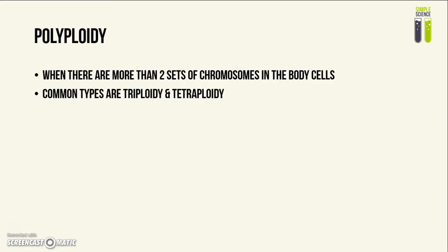So firstly, let's look at what polyploidy actually is. Polyploidy is a condition that occurs when there are more than two sets of chromosomes present in the autosomal cells of the body. The most common types of polyploidy are triploidy and tetraploidy, meaning three sets and four sets of chromosomes in the autosomal cells respectively. Even though they are the most common types of polyploidy, it is worth noting that these conditions are very rare. Triploidy occurs in only one to two percent of pregnancies, and tetraploidy is even rarer than that.